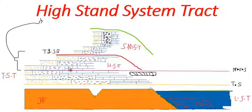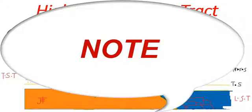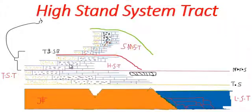Coarsening upward sequence forms in high stand system tract. Limestone is fine, then shale is coarse, and then sandstone is coarser. So coarsening upward sequence forms during high stand system tract.